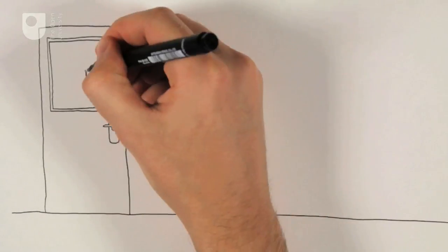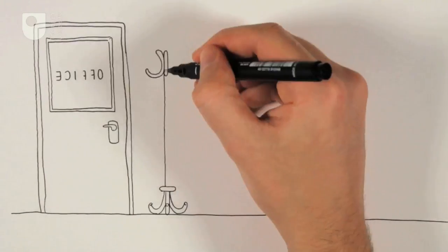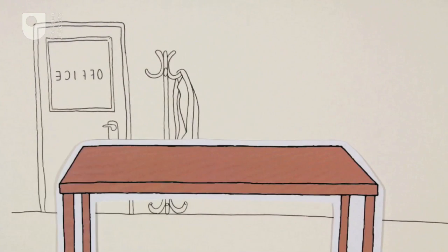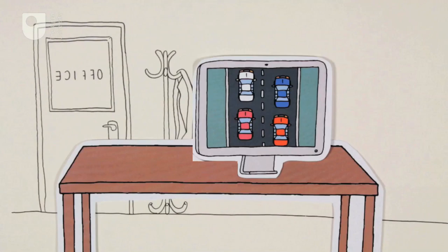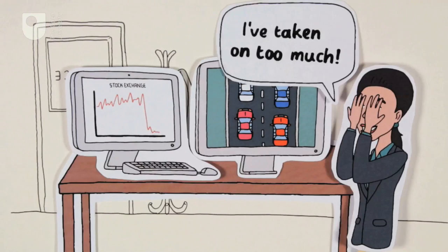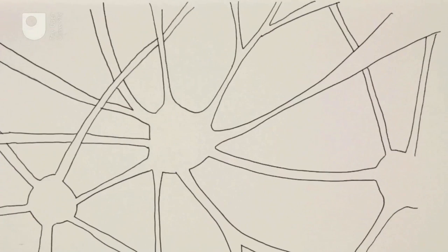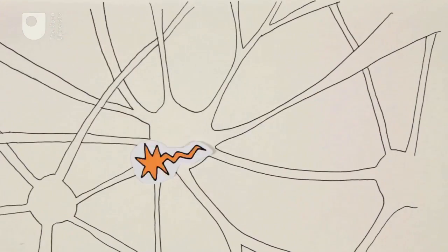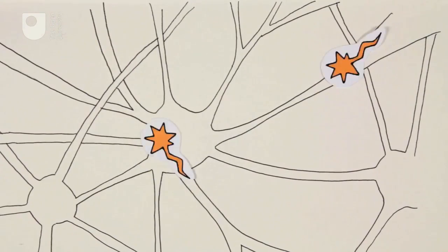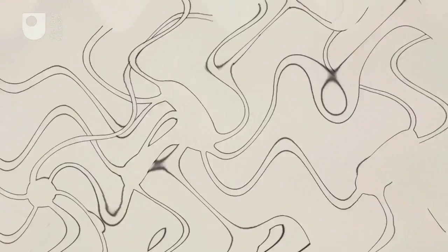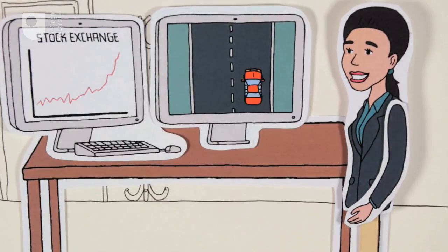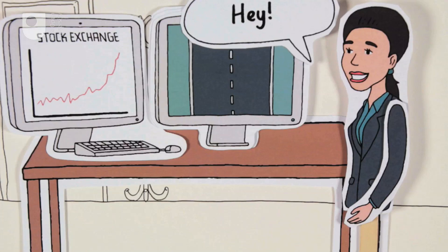We can see complex systems at work all over the place, from the flocking patterns of swallows to the way traffic flows through a city and the rise and fall of stock markets. Some scientists even see consciousness as the result of a complex system, with billions of seething brain cells self-organising to give the illusion of intelligence. No offence.